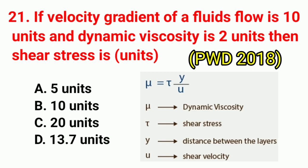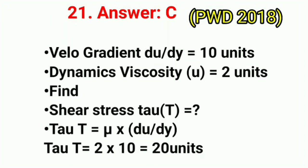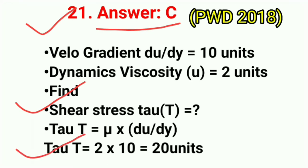Question No. 21. If the velocity gradient of a fluid's flow is 10 units and dynamic viscosity is 2 units, then shear stress is how many units? Correct answer is option C: 20 units. Using the formula: τ = μ × (du/dy). Keeping these values: τ = 2 × 10 = 20 units.